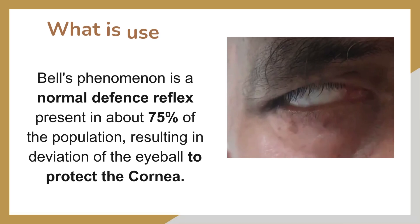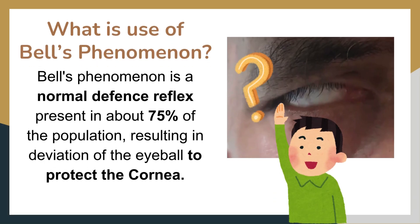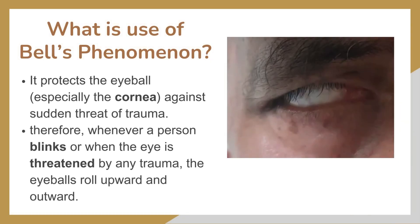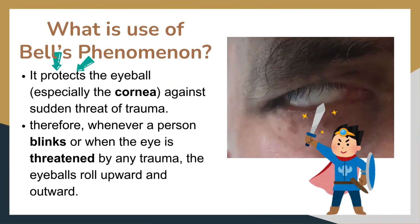What is the use of Bell's phenomenon? Bell's phenomenon is a normal defense reflex present in about 75% of the population, resulting in upward deviation of the eyeball to protect the cornea. Bell's phenomenon is present in most healthy people, and it should not be regarded as a pathognomonic sign.